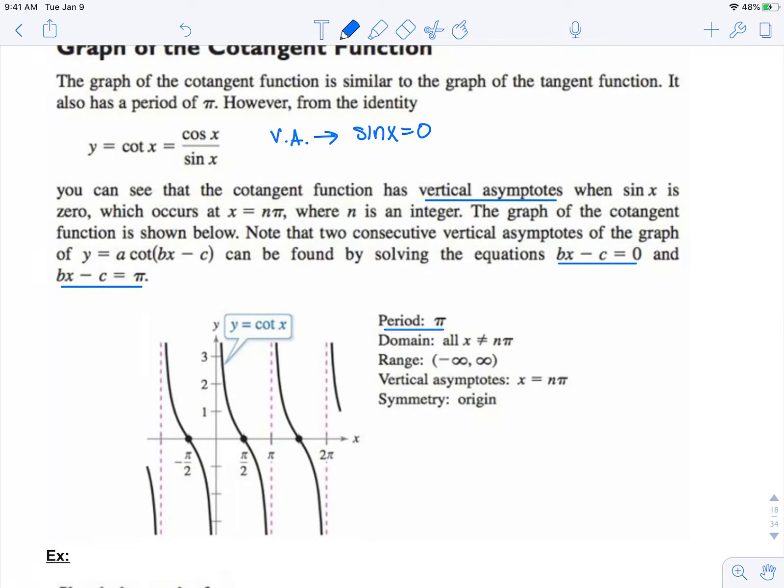Our period is pi, but now for a cotangent, we start up, and then go zero, and then go down.